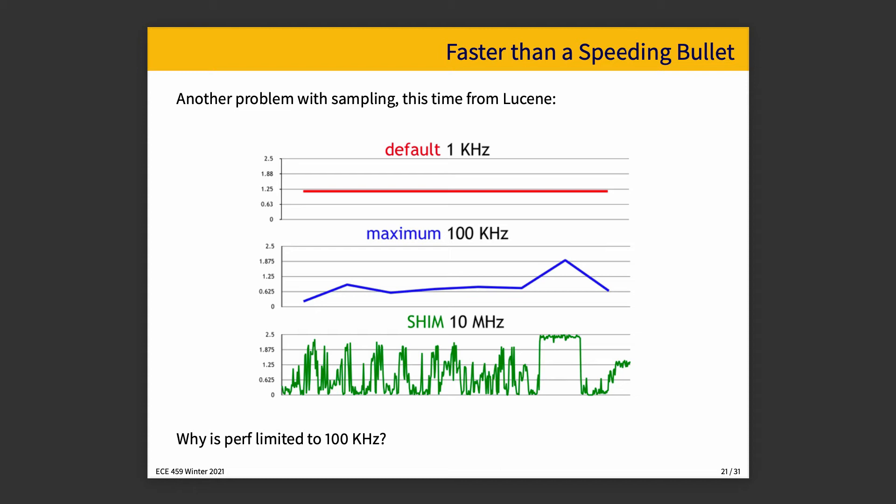Another problem with sampling is that your sampling rate is very important to determining what actually you observe. This is a data set from Lucene. It's a search indexer. If you profile the application with the default approach, which is the default sample rate for perf, which is 1 kilohertz, so 1,000 samples per second, we see nothing interesting whatsoever. We would say the application is at steady state and nothing is happening.